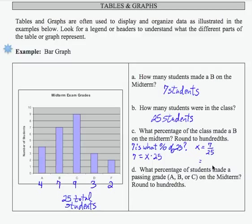So I get x equals seven over 25. If I divide there, I get 0.28, and converting that to a percent would mean 28% of the students made a B on the midterm.